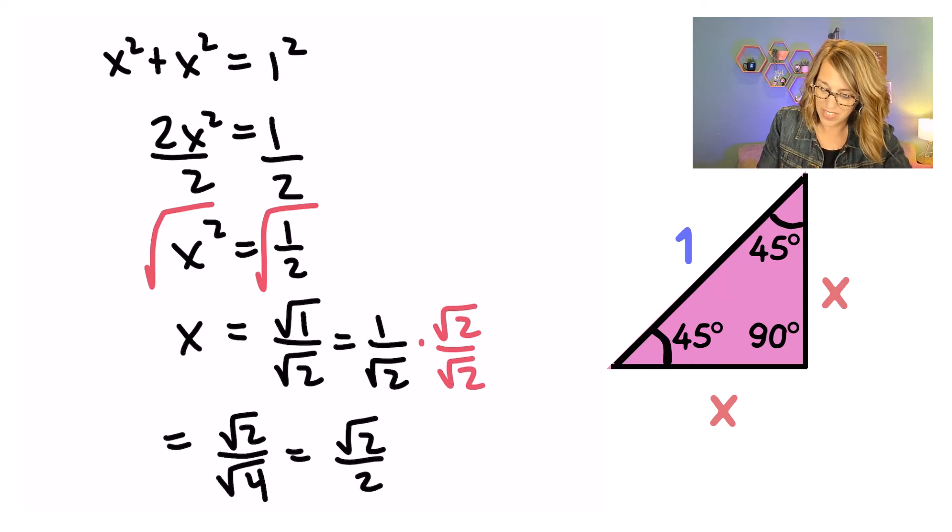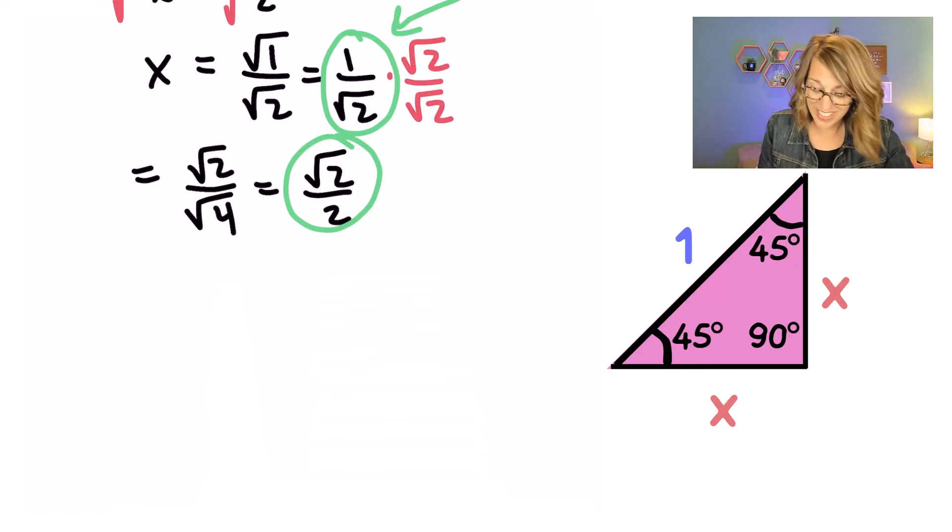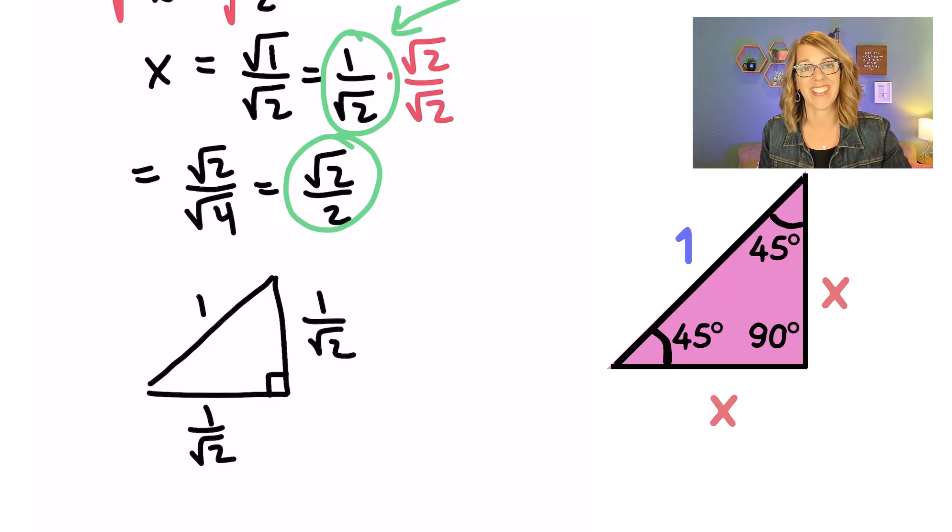Either of these work for X. So I've solved this right triangle. We were given the 1 on the hypotenuse, and I'm going to go ahead and put that 1 over radical 2, either form will work, on the missing sides.